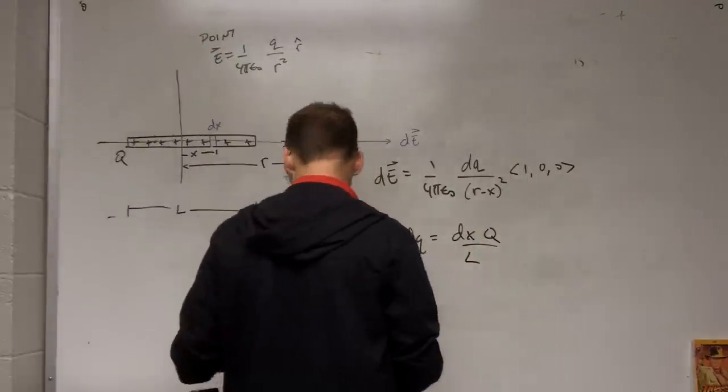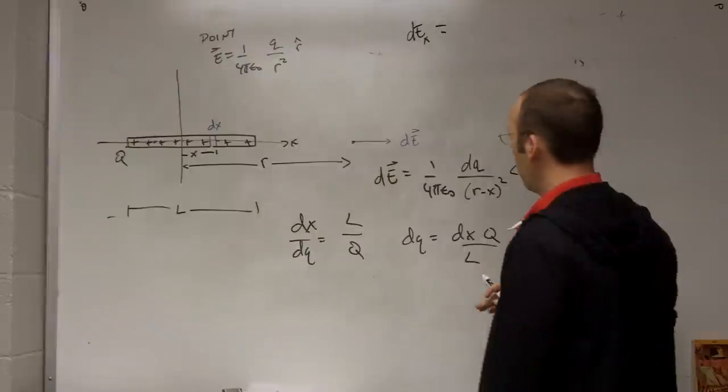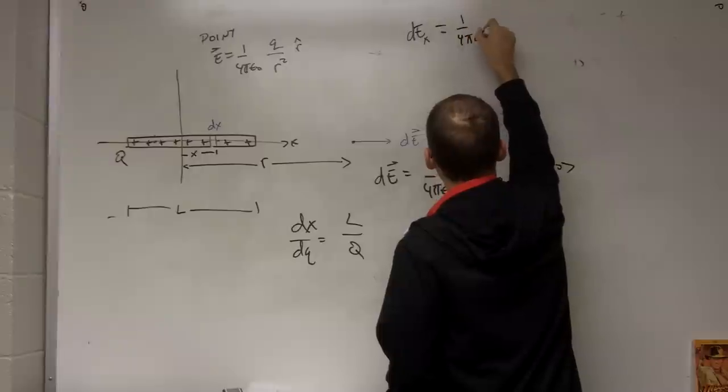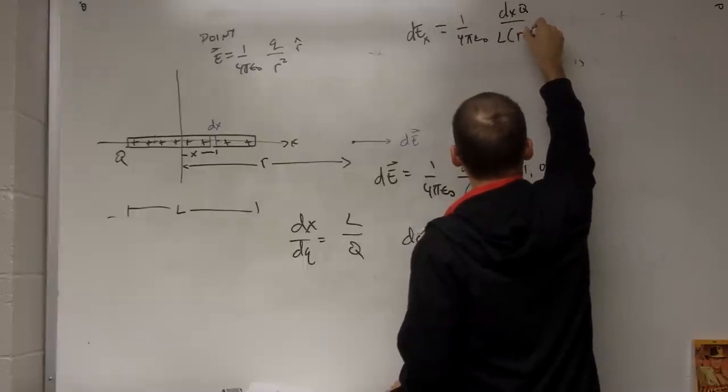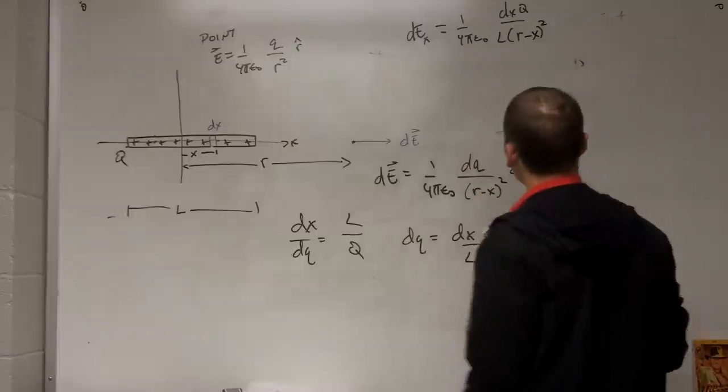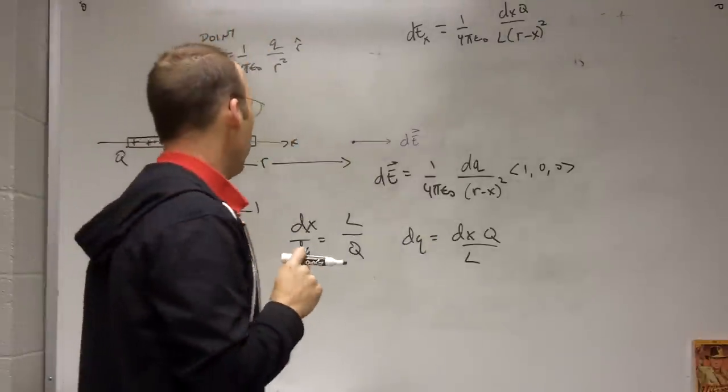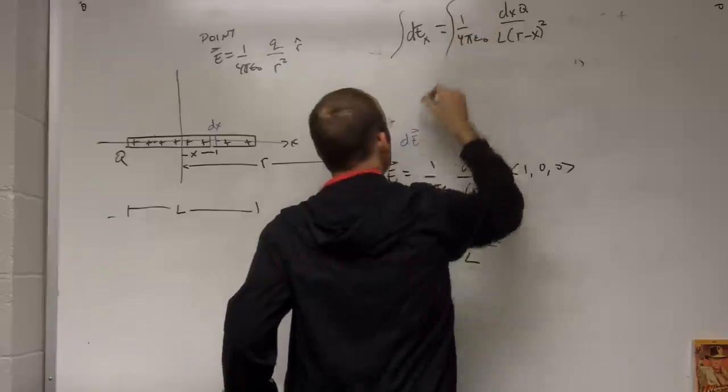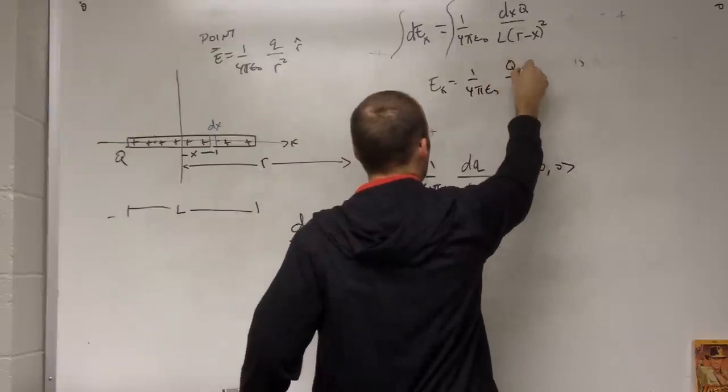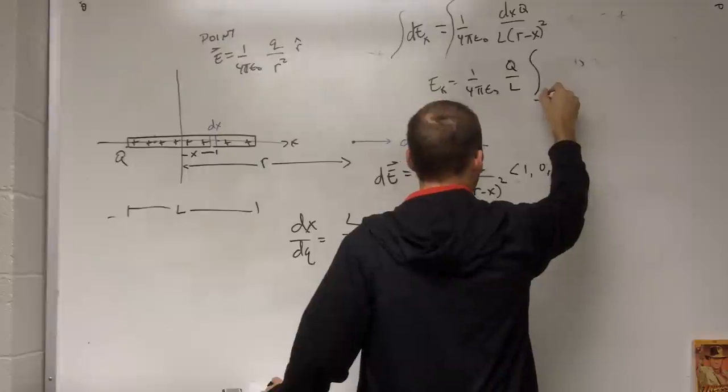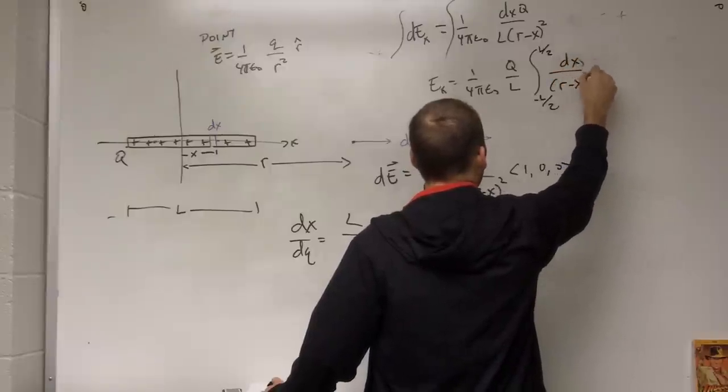And now I can put that in up here, and I get, let me just write it as DE, and this is just the X component. The other stuff is 0. I think we can see that. So I'm going to get 1 over 4 pi epsilon naught. DQ is going to be DX Q over L R minus X squared. So now that I have the expression for the electric field due to that one point, I can integrate both sides.